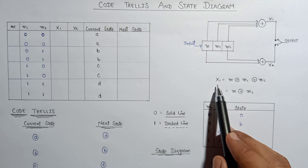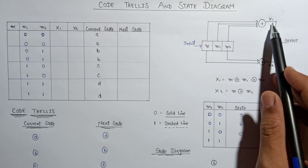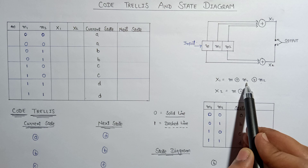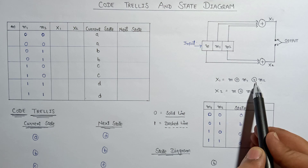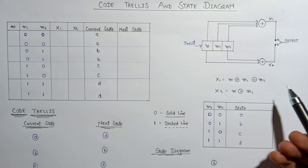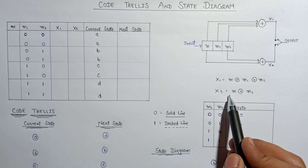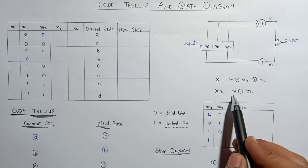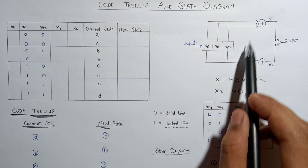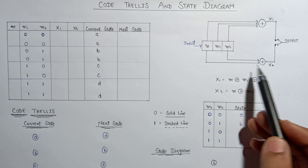The representation for x1 would be m XOR m1 XOR m2. Similarly, x2 will be equal to m XOR m2, as we can see from this encoder.